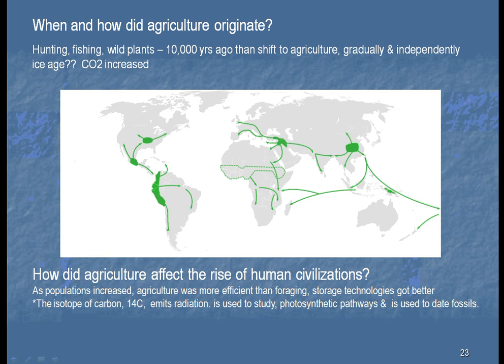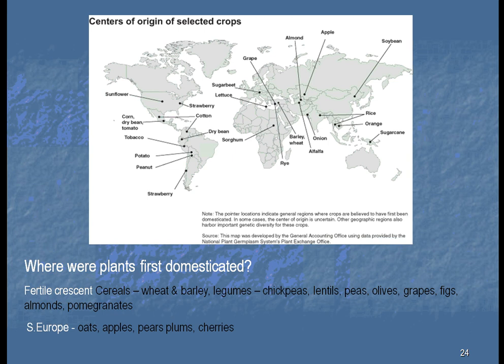We can look at fossils and, using the isotope of carbon — carbon-14 — to see how old they were. This allows us to date them and to see where plants came from. We have a good idea on this one where they came from. We can go back now and look at the DNA to even get a better idea of where they came from.